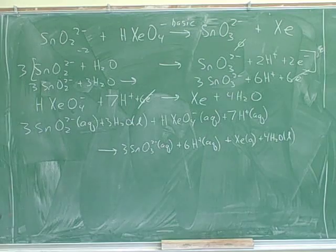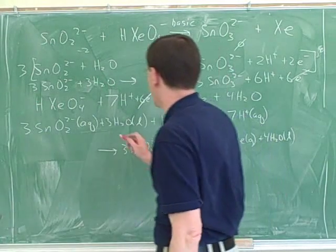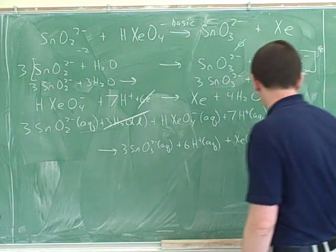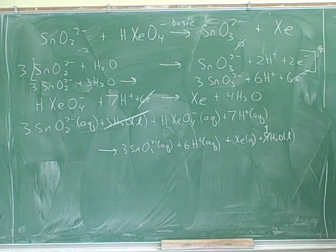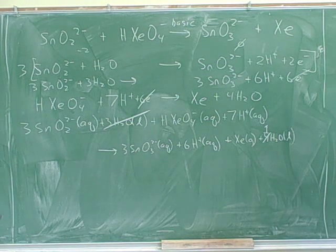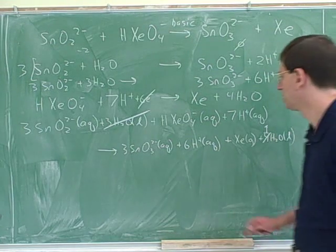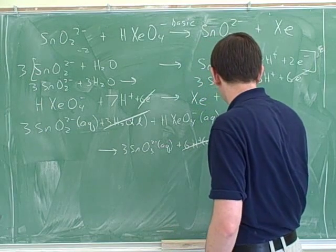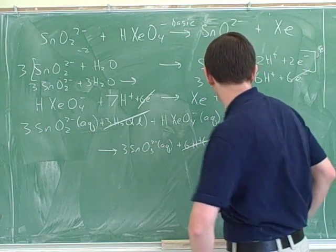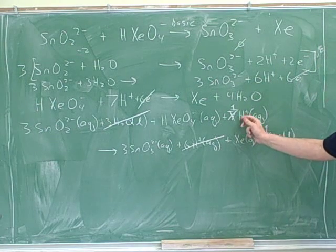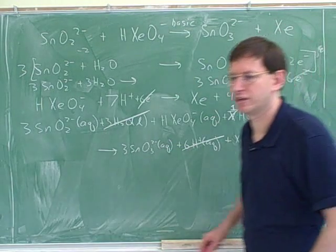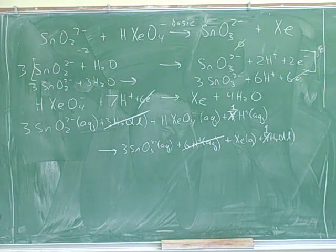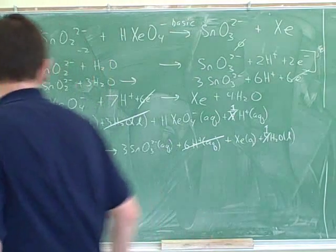So if we cancel, what is that going to leave us with? With one water on the product. Like that. Good. Well, if you're going to do that, you can also cancel the protons. Yeah, it's going to be then one on the reactant side, one proton left. That's right. One proton left over here. Good. So the things that tend to cancel are protons and waters. Yeah, that makes a big difference. So now what? Yeah.